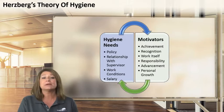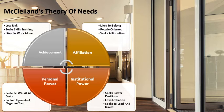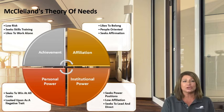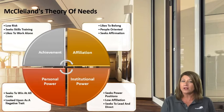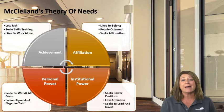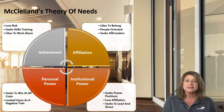David McClelland came along about the same time and broke things down into categories, saying all of these things motivate human beings, but the individual is driven by one more than the others — we all have a combination. If you're more achievement oriented, you seek feedback, like to work alone, prefer pay-for-performance environments, and seek out training and other ways to develop so you can achieve — but you're a little low risk.